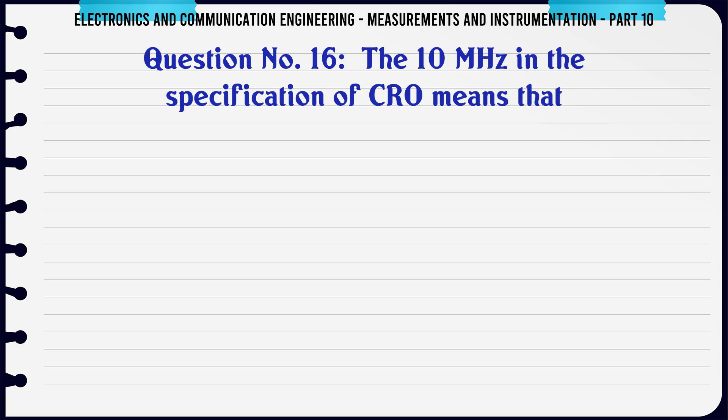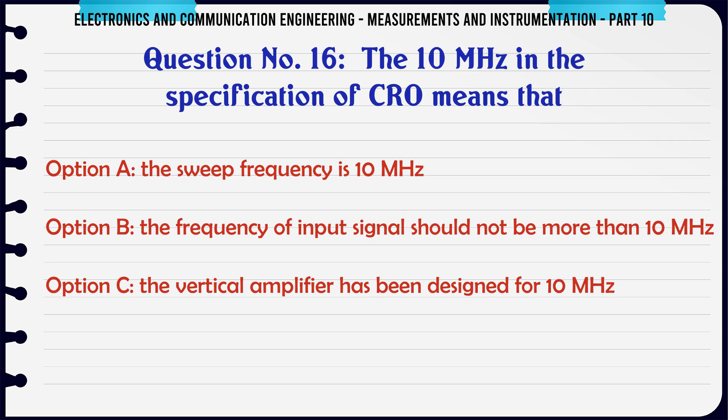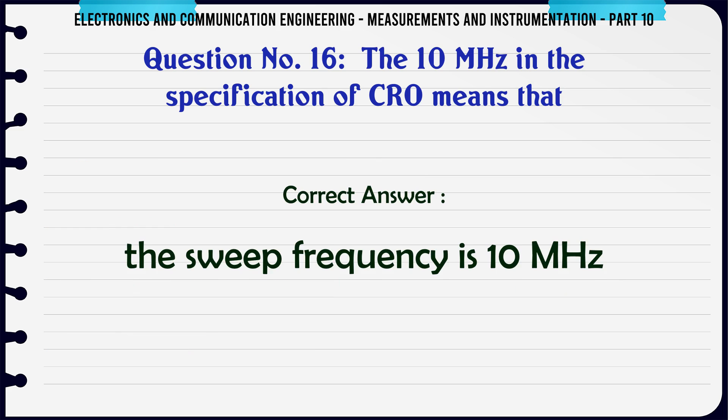The 10 MHz in the specification of CRO means that: A) the sweep frequency is 10 MHz, B) the frequency of input signal should not be more than 10 MHz, C) the vertical amplifier has been designed for 10 MHz, D) none of the above. The correct answer is the sweep frequency is 10 MHz.